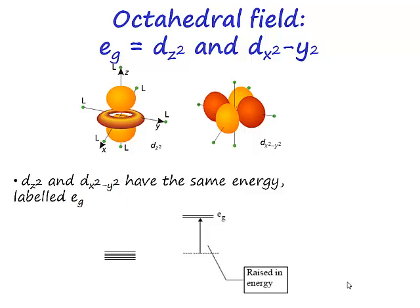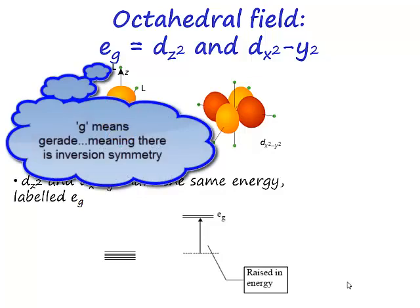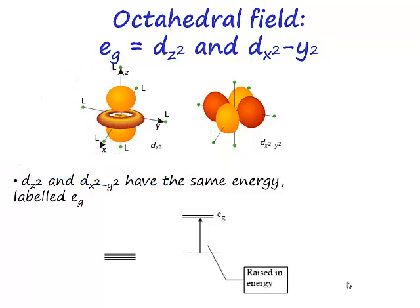So this is e. What does the g label mean? The g stands for the German word gerada, and essentially what it means here is that we have inversion symmetry. So if you look at an octahedral arrangement, an octahedral arrangement of ligands has inversion symmetry.